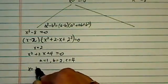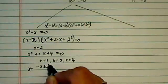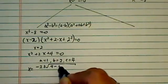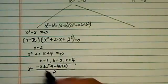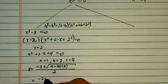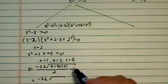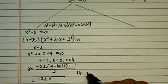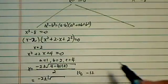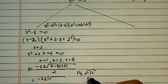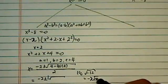So x is equal to minus 2 plus minus b squared, 4 minus 4ac. The whole thing divided by 2. So we have minus 2 plus minus, that's 16, 4, that's 12. So minus 12, so I have i coming out.